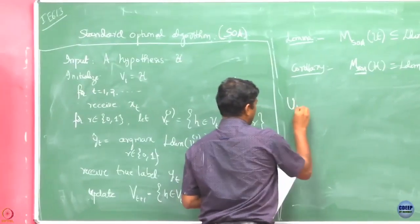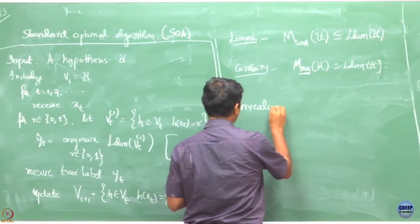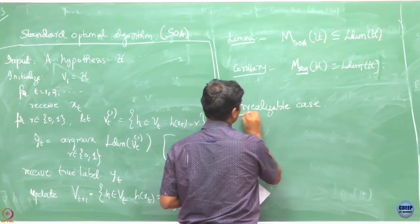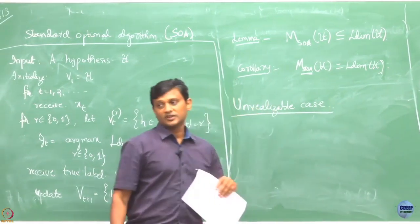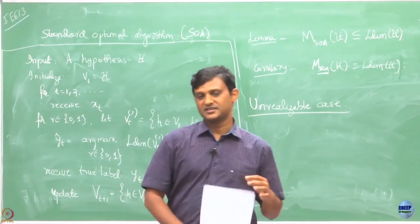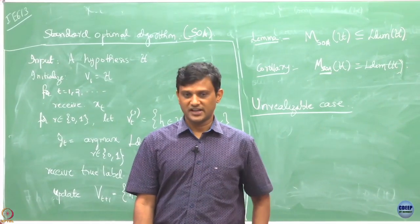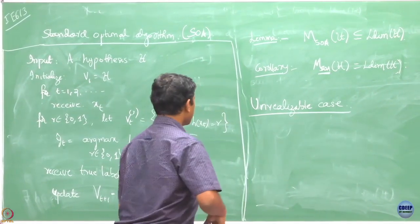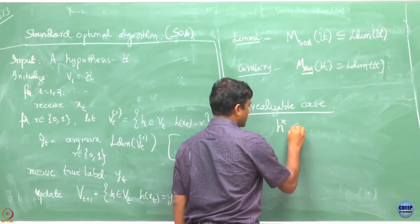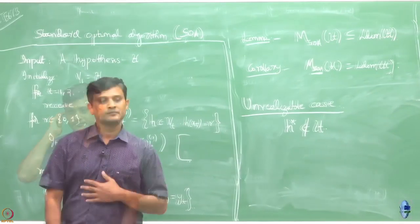We are now looking at the unrealizable case — by unrealizable I mean that the hypothesis H-star that generates the labels need not be in my hypothesis class H. So this H-star which generates my labels need not belong to capital H.